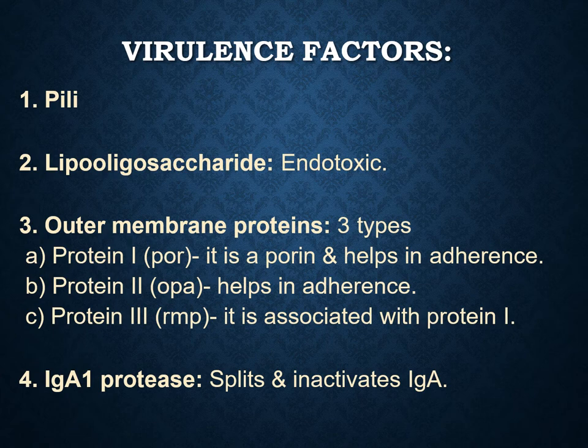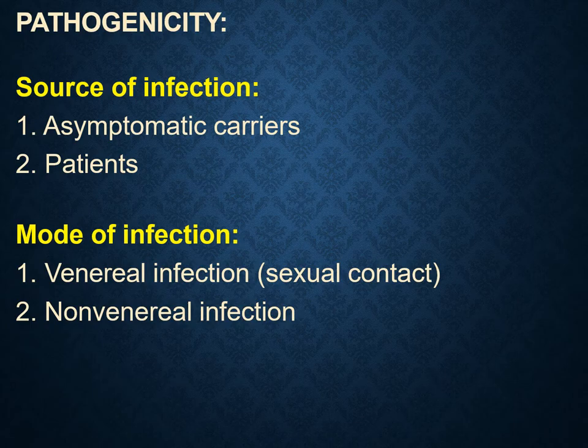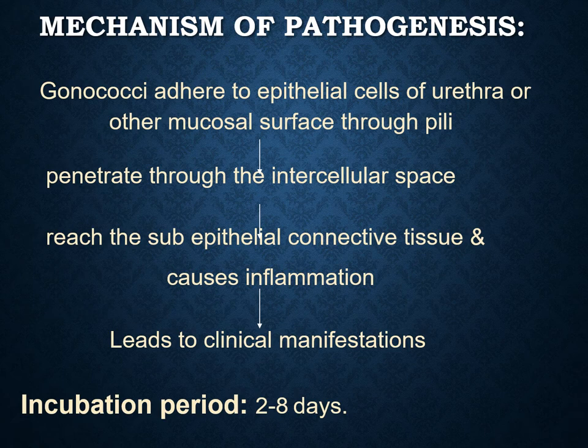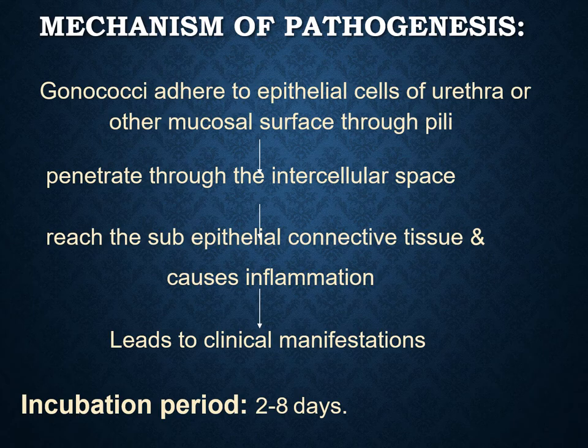The source of infection is mainly from asymptomatic carriers and from patients. There are two important modes of infection: venereal infection, mainly through sexual contact, and non-venereal infection. The mechanism of pathogenesis begins with the organism adhering to the epithelial cells of the urethra or other mucosal surfaces through hair-like projections, namely pili. It then penetrates through the intercellular space and finally reaches the sub-epithelial connective tissue, causing inflammation and then severe clinical manifestations.